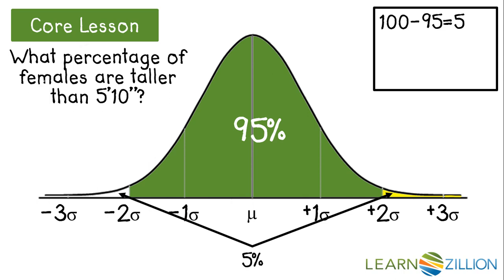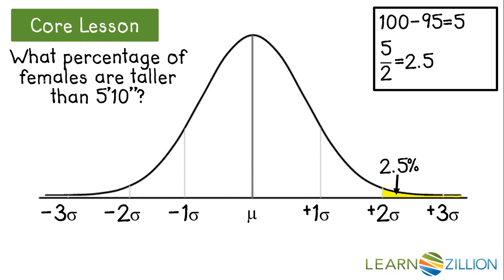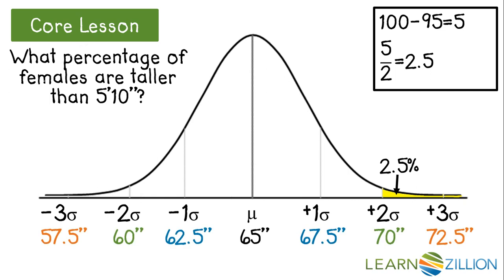We can apply the fact that a normal distribution is symmetric, so the percentage in the left tail must equal the percentage in the right tail. Therefore, each tail represents about 2.5%, because 5% cut in half gives 2.5. So we would estimate that about 2.5% of adult American females are taller than 5 feet 10 inches.